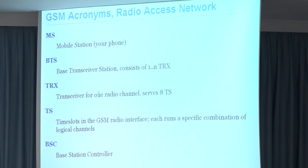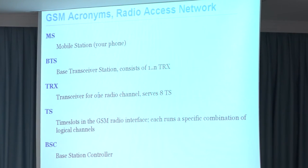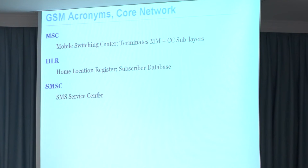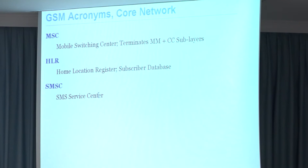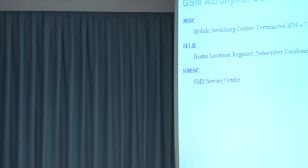Some acronyms to get started: MS is the mobile station (not Microsoft). BTS is the base transceiver station. TRX is the transceiver, a sub-part of a BTS that serves eight TS (time slots), because it's a time division multiple access system. BSC is the base station controller. On the core network side, we have the MSC — the mobile switching center — and the HLR, the home location register, plus an SMS service center and other elements.